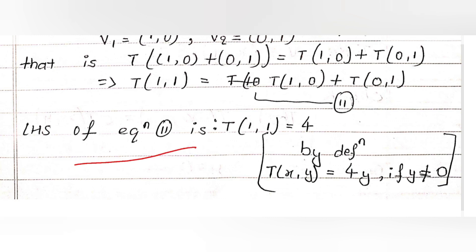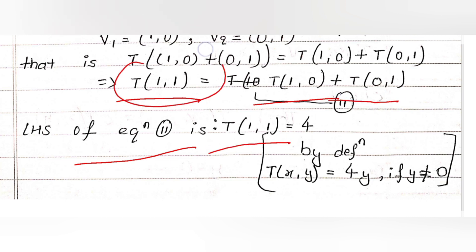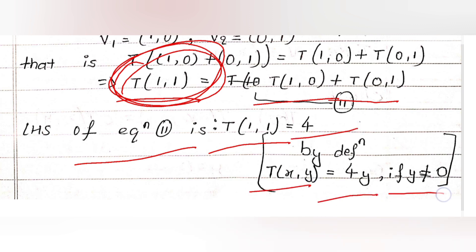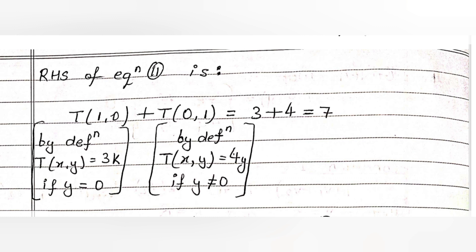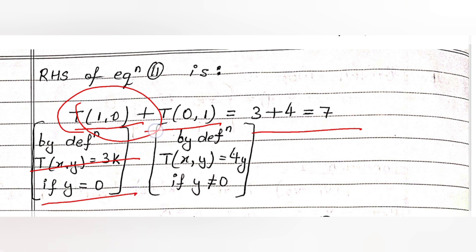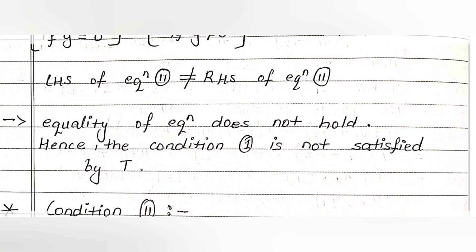For the LHS of Equation 2: T(1, 1) — since y = 1 ≠ 0, by definition T(x, y) = 4y, so T(1, 1) = 4·1 = 4. For the RHS: T(1, 0) — since y = 0, T(1, 0) = 3·1 = 3. T(0, 1) — since y = 1 ≠ 0, T(0, 1) = 4·1 = 4. So RHS = 3 + 4 = 7.